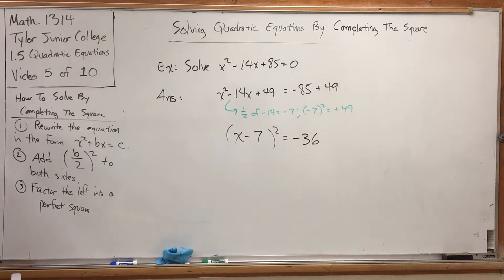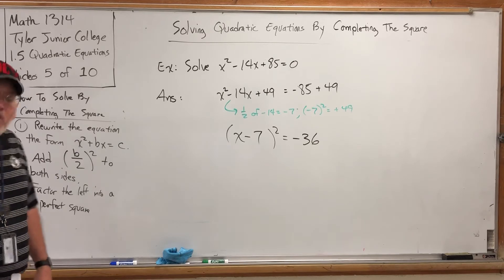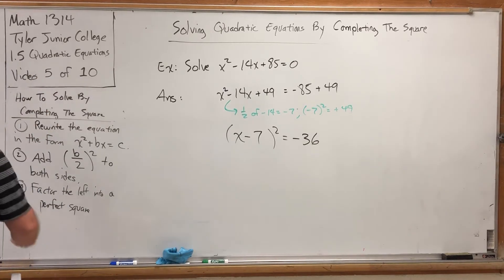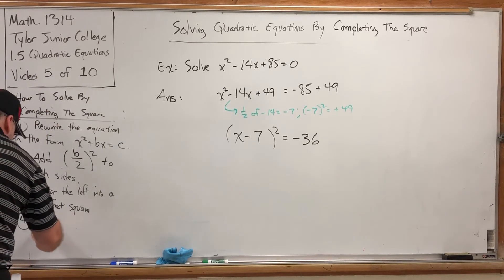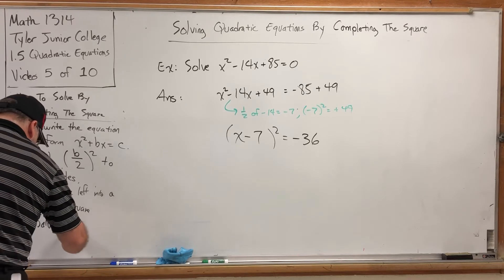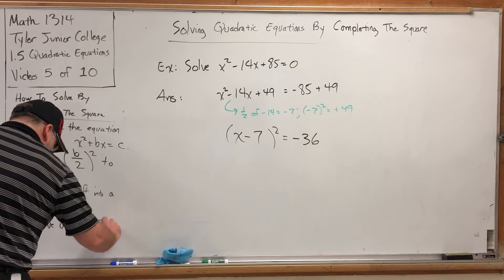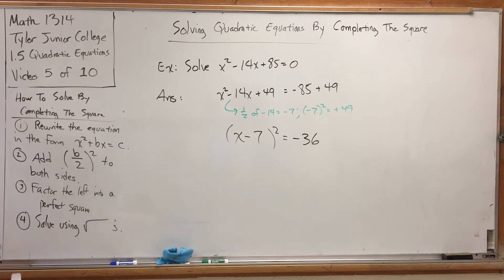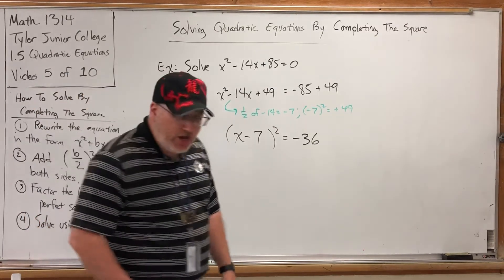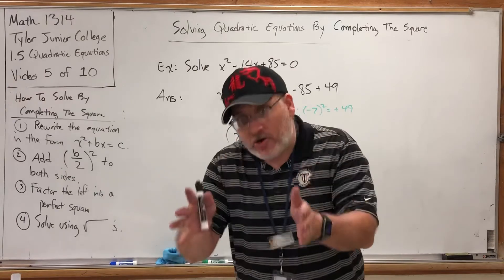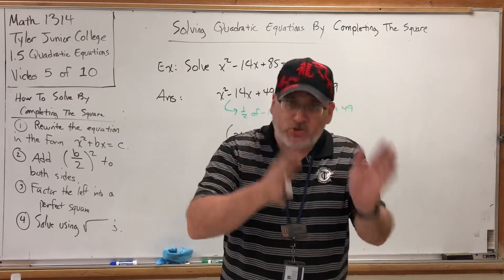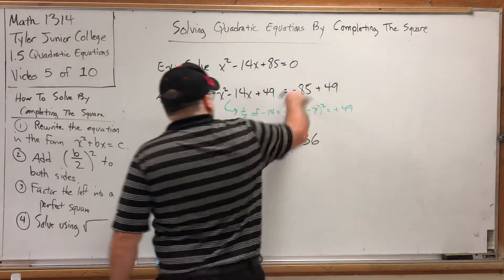But if you can factor the left into a perfect square, you are now ready to solve using square roots. And that is the fourth and final step. Solve using square roots. In fact, the whole premise behind solving by completing the square is to not actually solve it at all, but to prepare it to solve using square roots.